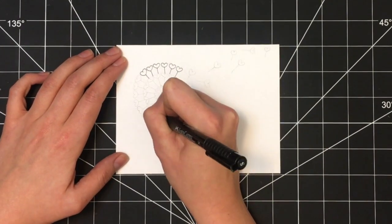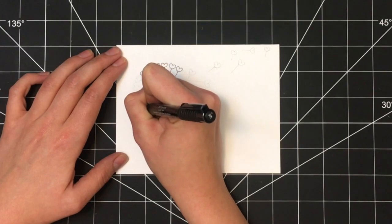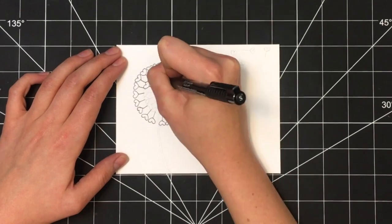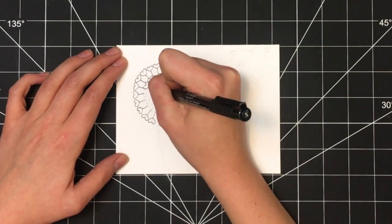Here I'm using a Faber-Castell pen in size S. The exact pen I'm using is linked in the description box below. However, you can use any thin black pen that you have.